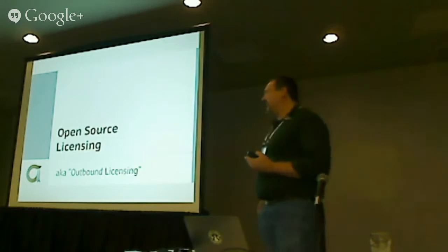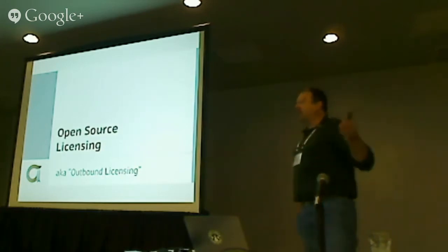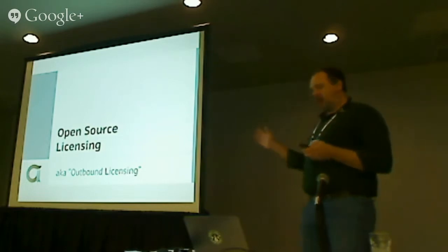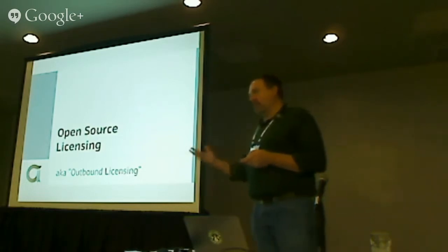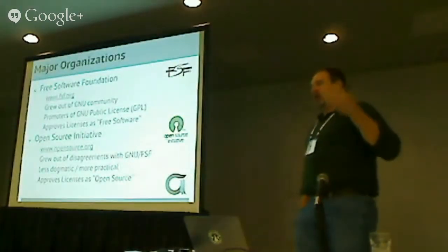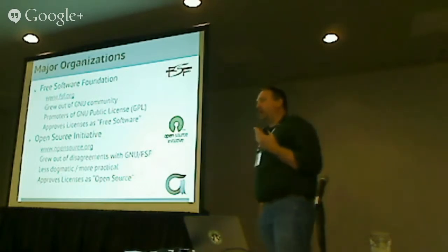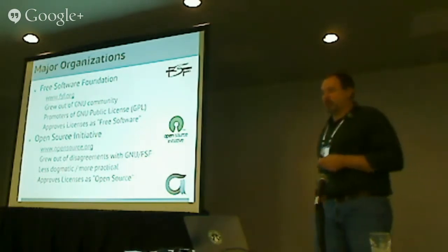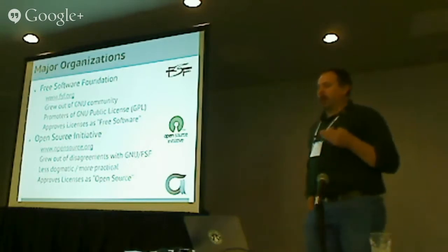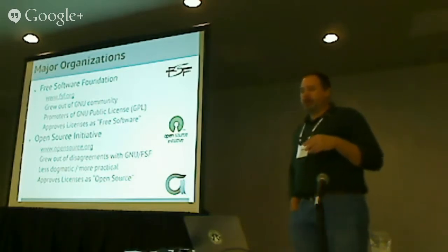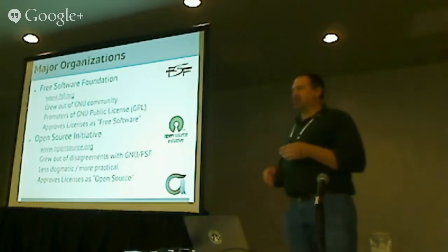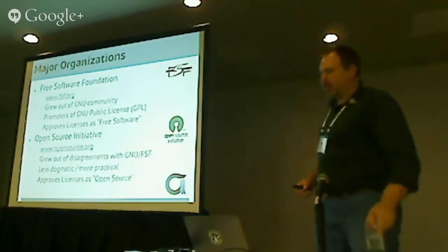What do we mean by licensing when we talk about open source? There are a number of different pieces. The licensing piece, which we talk about as outbound licensing, is the most public part. It's good to know about the two major organizations around open source licensing. The older original one is the Free Software Foundation or FSF, which grew out of the GNU community before we even started using the term open source. They're the promoters of the GPL license, and they approve licenses as being free software licenses — basically, are they compatible with the GPL?